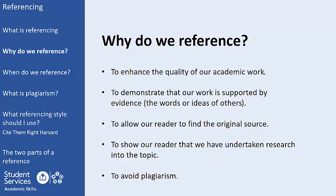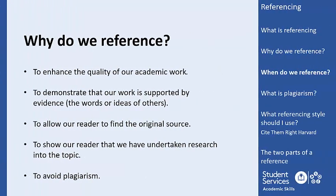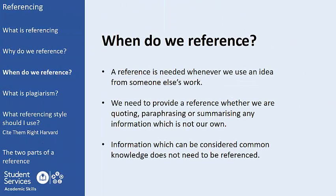Finally, referencing helps to ensure that we avoid plagiarism — more on this in the next few slides. Whenever we use an idea from somebody else's work, for example a journal article, textbook or website, we should provide a reference to make it clear where that idea came from. This is the case regardless of whether we are paraphrasing, summarising or directly quoting from their work. This is a key part of good practice in academic writing. Only information which can be considered common knowledge does not need to be referenced.